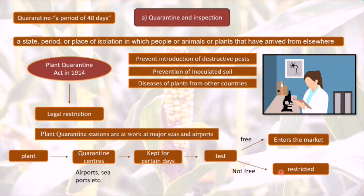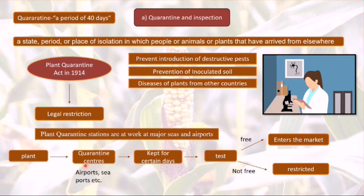In the quarantine centers, all kinds of laboratory facilities are available where tests are carried out to ensure the plant material is free from pathogen. In Gujarat, examples include the quarantine center at Kandla port in Kutch district and also in Bhavnagar. This is about quarantine and inspection, where newly arrived plants are tested for any presence of pathogens — a preventive measure to stop disease from entering the country.